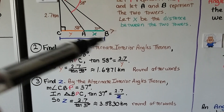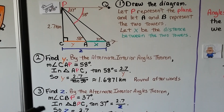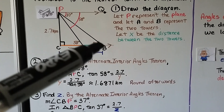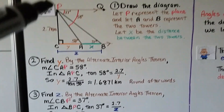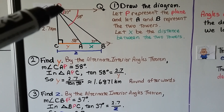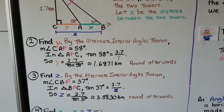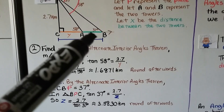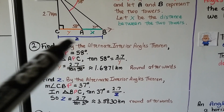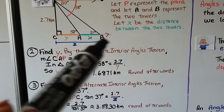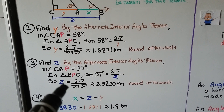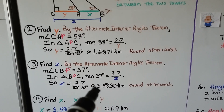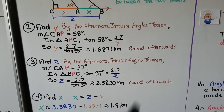Now we find Z, the full length. By the alternate interior angles theorem, angle CBP is 37 degrees — if PB is the transversal and the depression angle is 37 degrees, then that interior angle is also 37 degrees. We have tangent of 37 degrees equals 2.7 over Z, so Z equals 2.7 over tangent of 37 degrees, which is approximately 3.5830 kilometers. Again, we keep this unrounded.